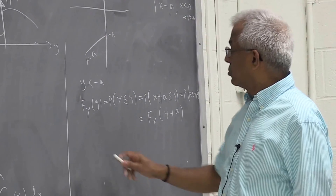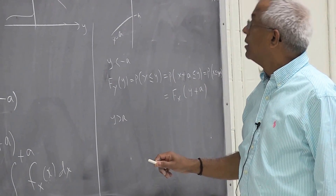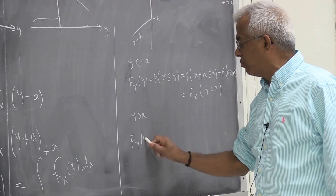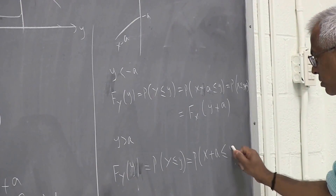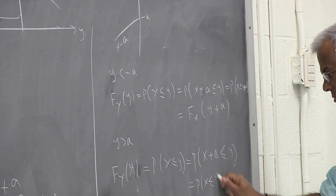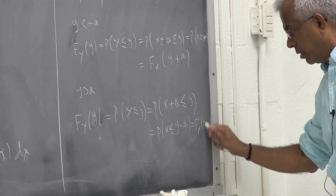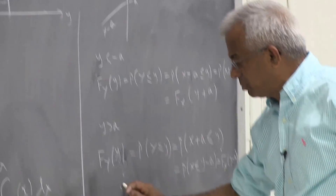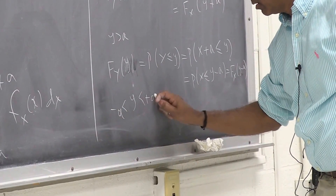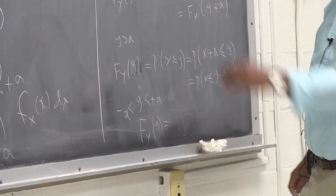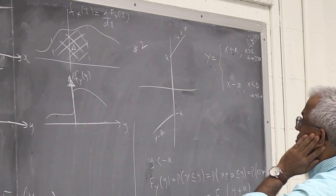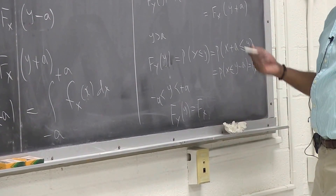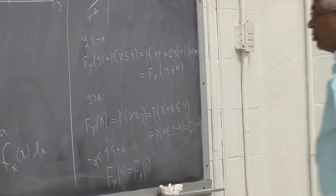For y > a, F_Y(y) = probability of Y ≤ y, and the relation between x and y is x + a ≤ y, so probability of X ≤ y - a, which is F_X(y - a). When y is between -a and +a, then x ≤ 0, so F_Y(y) = probability of X ≤ 0, which equals F_X(0). So F_Y(y) is constant and equal to F_X(0) in this middle region.